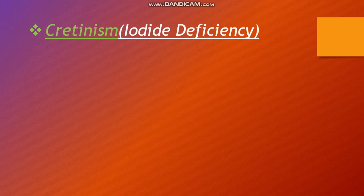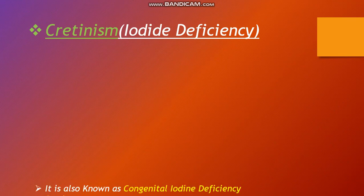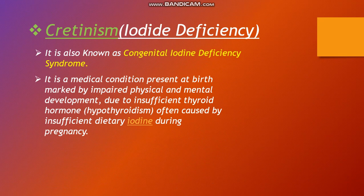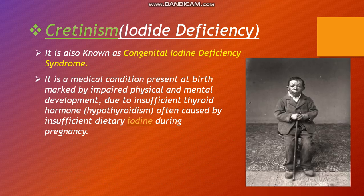Cretinism is hypothyroidism in children. It is also known as congenital iodine deficiency syndrome. It is a medical condition present at birth, marked by impaired physical and mental development due to insufficient thyroid hormone, often caused by insufficient dietary iodine during pregnancy.